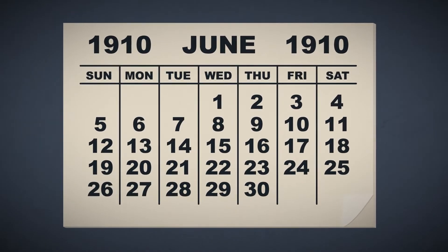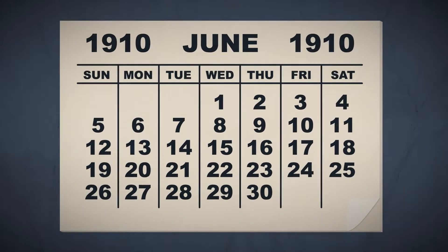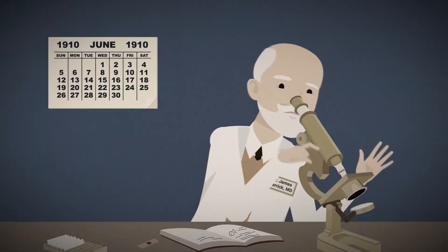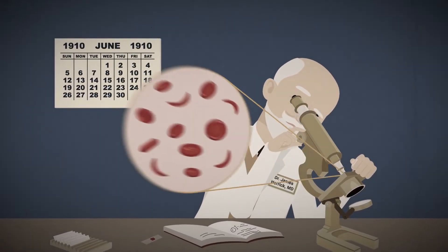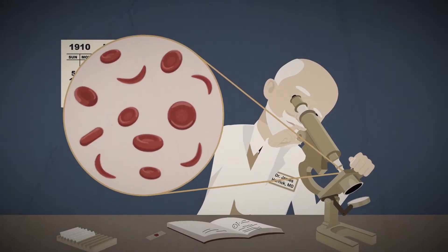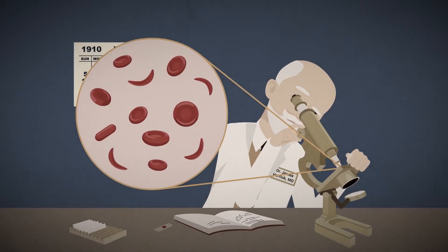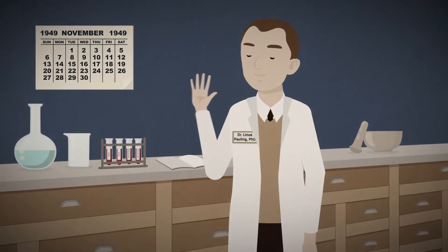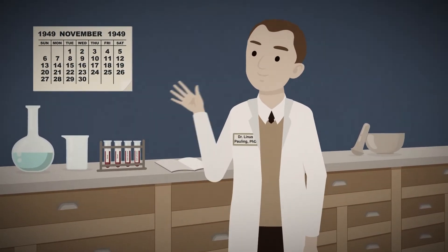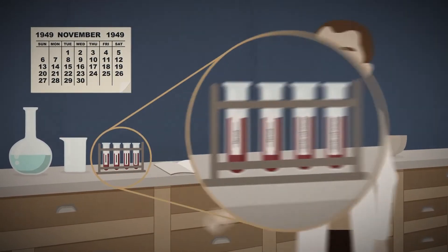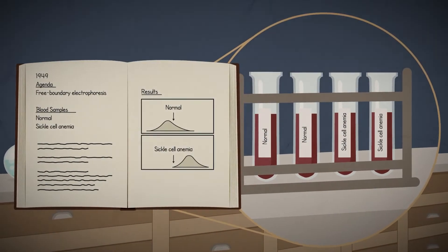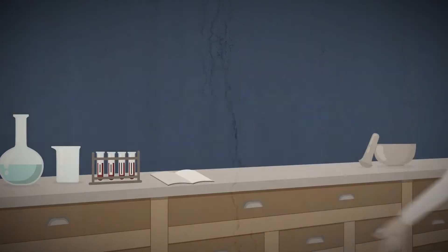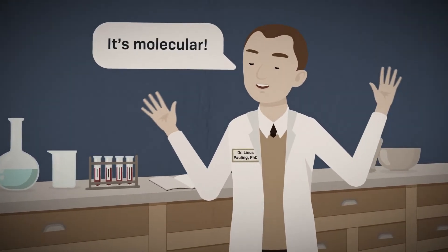The disease was first clinically described in 1910 by an American physician named James Herrick as sickle-shaped red blood cells on the blood film. In 1949, Linus Pauling and his colleagues characterized sickle cell anemia at the molecular level, making it the first known molecular disease.